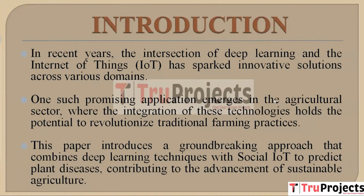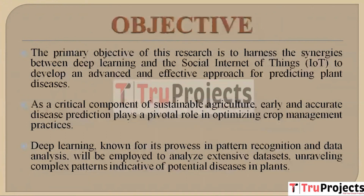This paper presents a pioneering method that merges deep learning methodologies with Social IoT to anticipate plant diseases, contributing to the progress of sustainable agriculture. Now coming to the objective part: this project aims to create a sophisticated and efficient method for forecasting plant diseases as an integral aspect of sustainable agriculture.